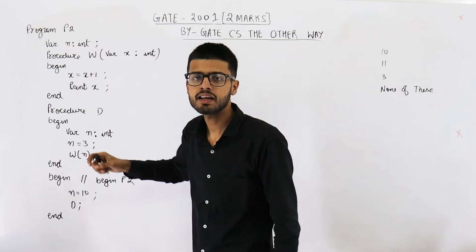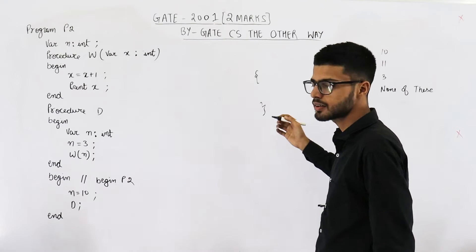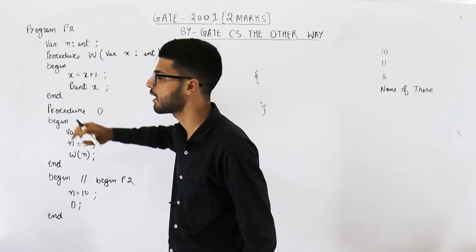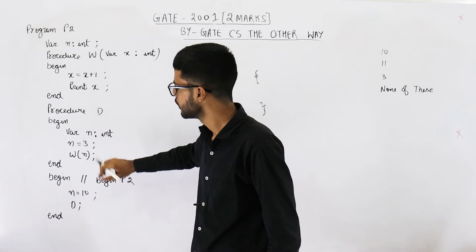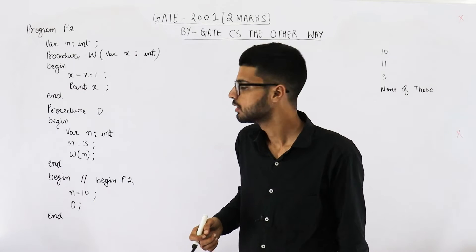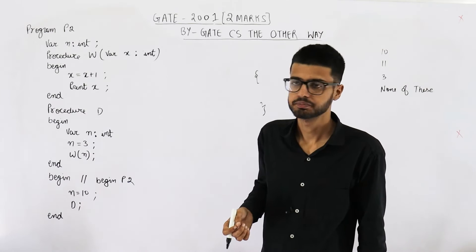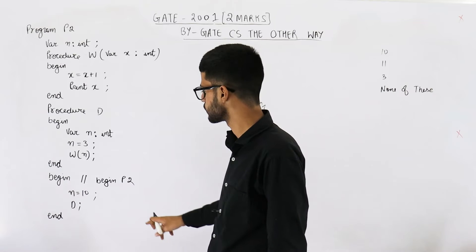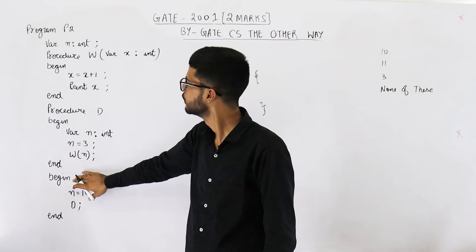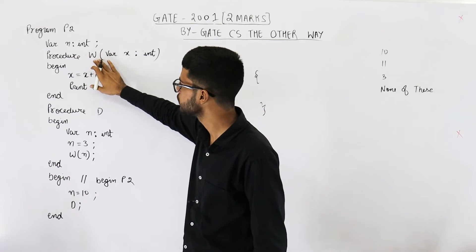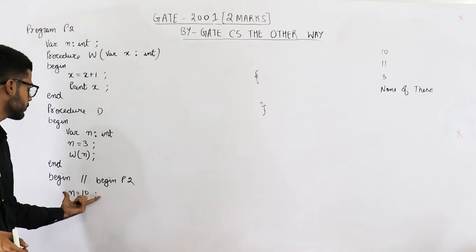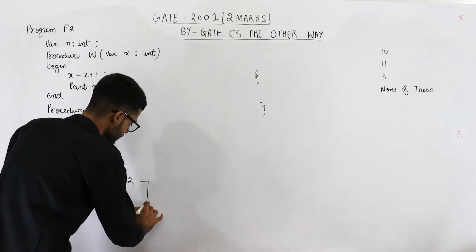What is 'begin' and 'end'? Begin and end stand for curly brackets only, just like in C language where you use brackets to give the definition of a function — here we write begin and end. Similarly, there is a procedure called d. Now you can notice this begin and end is not linked to any function — it is for the main function. In the comments they have clarified that this begin is for the entire program named P2, meaning the entire code will begin from here.